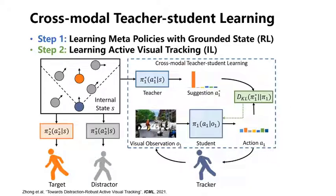Imitation learning minimizes the KL divergence between the distribution of the teacher's policy and the student's policy. The teacher helps the visual tracker avoid numerous trial and error explorations.